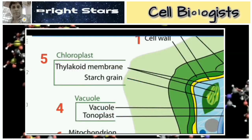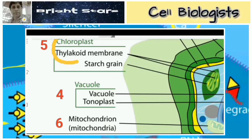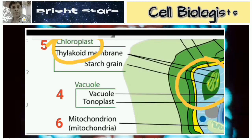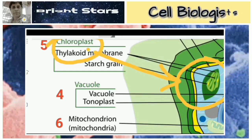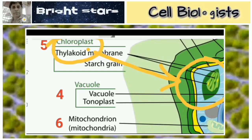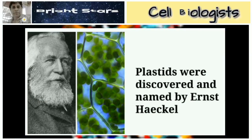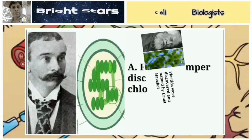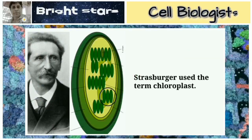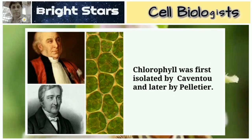In green plants and some blue-green algae, colorful substances called chloroplasts are present. Chloroplasts are responsible for photosynthesis and preparation of carbohydrates — they are a kind of plastid. Plastids were discovered and named by Ernst Haeckel. A.F.W. Schimper discovered chloroplasts and used the term 'chloroplast' for the first time. Chlorophyll was first isolated by Caventou and Pelletier.